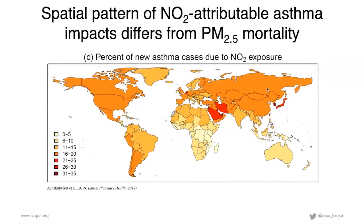Interestingly, the spatial pattern of NO2-attributable asthma impacts differs from PM2.5-related mortality. For PM2.5-related mortality — already in the Global Burden of Disease study — we see the highest impacts in developing countries with much higher PM2.5 levels. For NO2, we see a very high percent of new asthma cases attributable to NO2 exposure all over the world, including both developing and developed countries — the US, Canada, and throughout Europe — making it a much more spatially homogenous picture than PM2.5-related mortality.